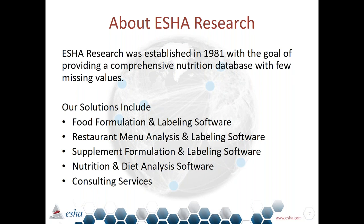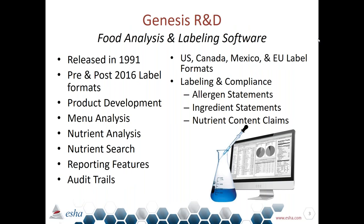ESHA was established in 1981 with the goal of providing a comprehensive nutrition database with few missing values. We have solutions that include restaurant labeling, food labeling, supplements, nutrition and diet analysis software, and consulting services. The program we're going to look at today is Genesis R&D, released in 1991. We have both the pre and post 2016 labeling formats in Genesis. Genesis is designed for product development, menu analysis, nutrient analysis, nutrient searching, reporting features, audit trails, and can create labels for the United States, Canada, Mexico, and Europe.